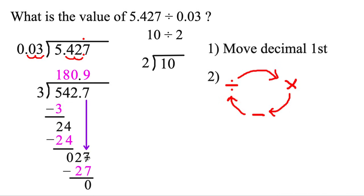And that is it. Once you bring down the last number, you don't have a remainder. Then that is our answer, 180.9. One way to contextualize this is, how many times can 3 cents go into $5.42? You can just think of it like money. And it can go in 180 times. So that's why that answer makes sense.